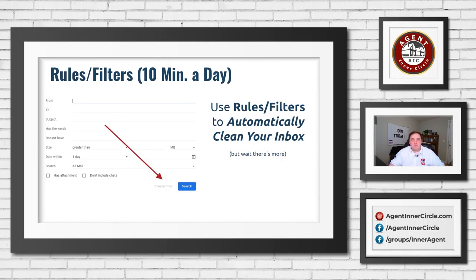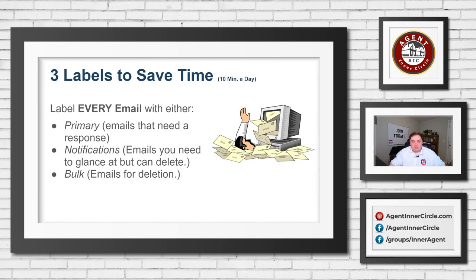When a new client comes in for the very first time, you take a quick extra 10 seconds: create a filter, if it's from their email address put them into the Primary inbox because they need a response from you. Anytime you get an email that's not labeled, figure out what the rule is and take 10 seconds to add it. Then every morning from that point forward becomes simple.